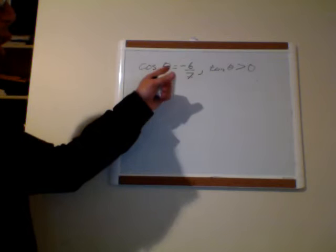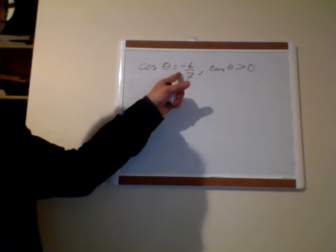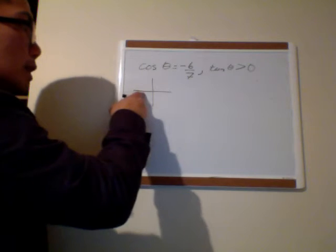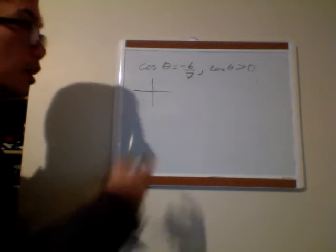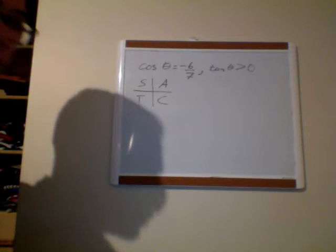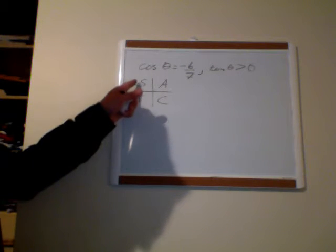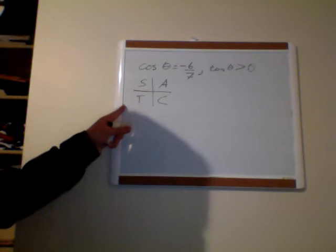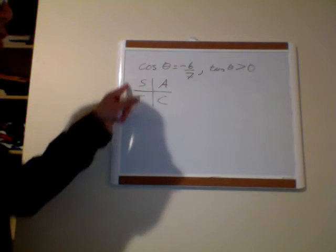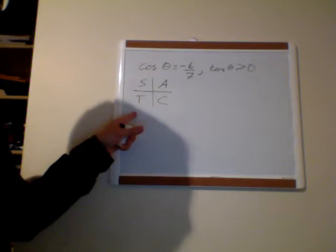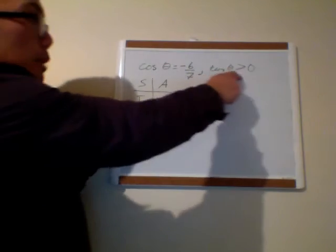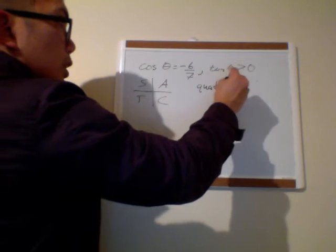What this means is cosine is negative. Cosine is really an x value, so cosine is negative in quadrants 2 and 3. You can remember that with 'all students take calculus.' But they also tell you that tangent is greater than 0, meaning tangent is positive. Tangent is positive in the third quadrant. So cosine being negative puts me in quadrants 2 or 3, and tangent being positive means I am in quadrant 3.